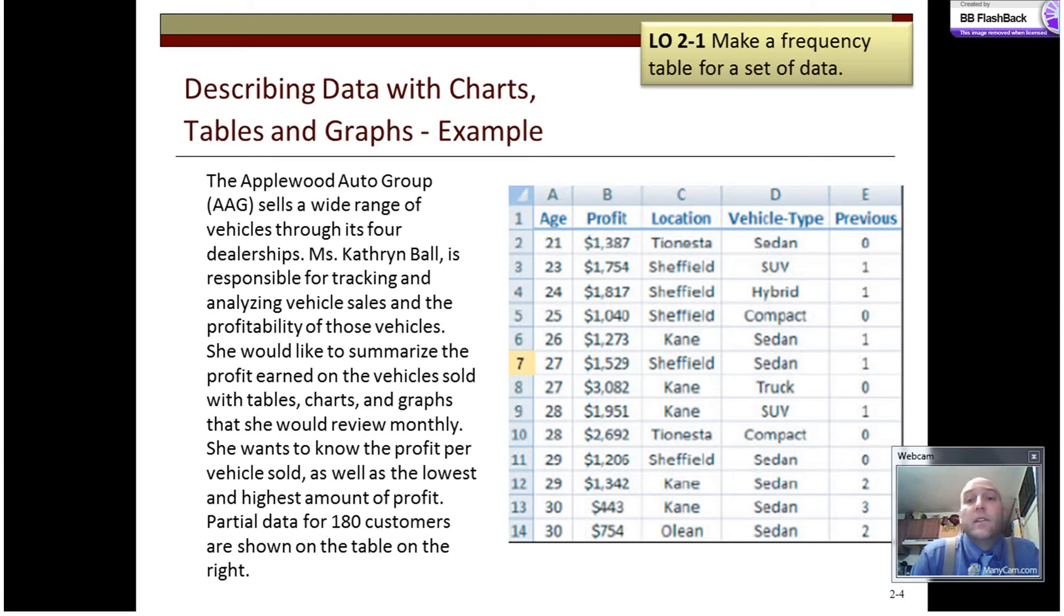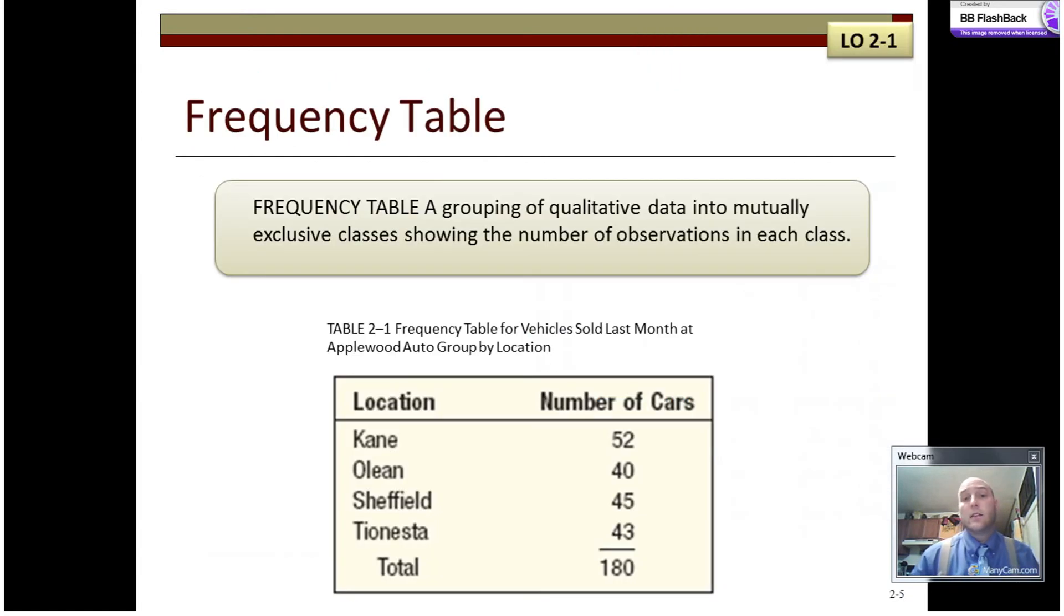The vehicle type—there's five vehicle types: sedans, compacts, hybrids, trucks, and SUVs—and how many previous owners there were. Zero would indicate a new car, one, two, three, four would indicate that there were that many previous owners. Anyway, this is the data that's going to be used for most of the things that get described here.